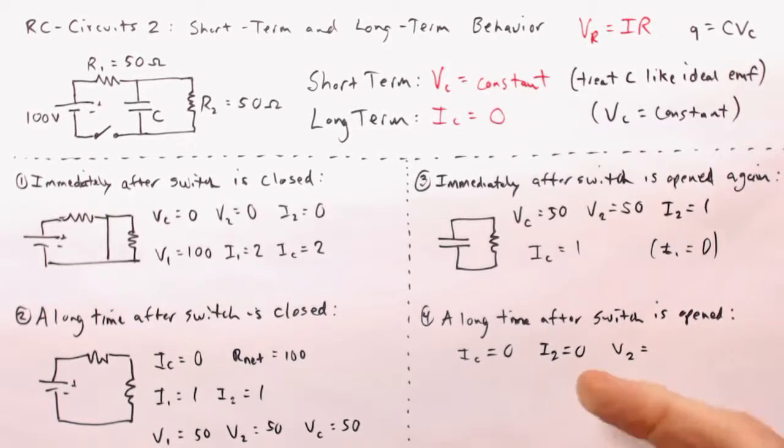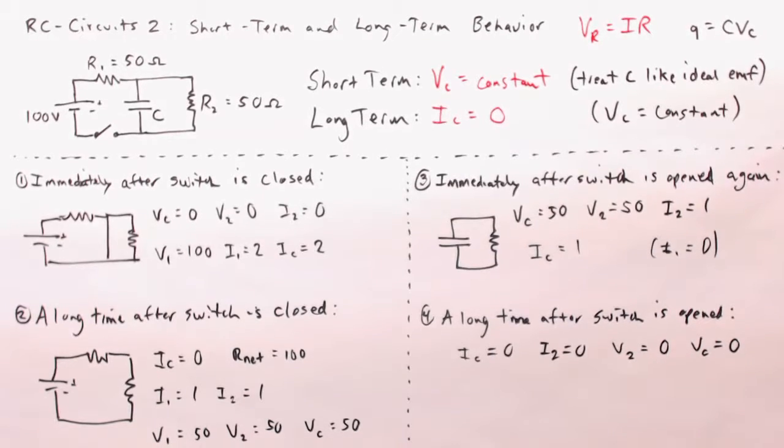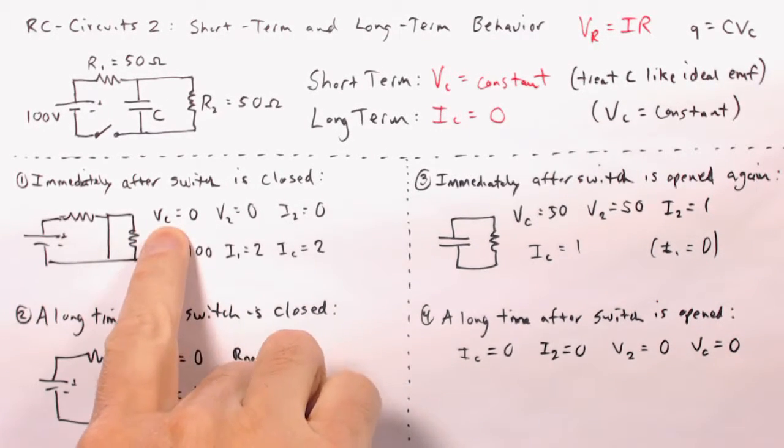Then V2 is proportional to I2, so they're both zero. And last but not least, C is in parallel to the resistor, so it has the same voltage, and therefore VC equals zero. And we have come around full circle right back to where we started.